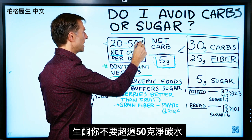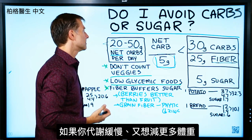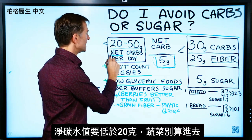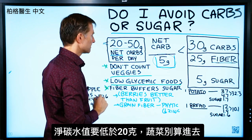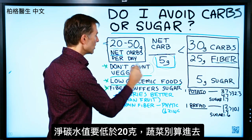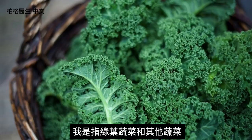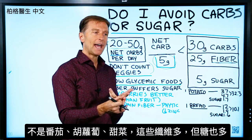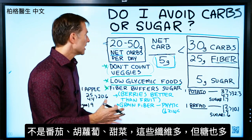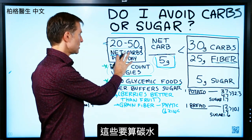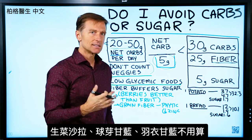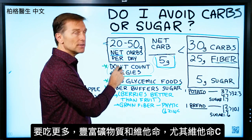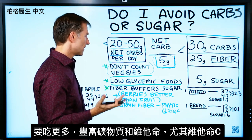With keto, you don't want to go above 50 grams. If you have a slow metabolism and want to lose more weight, cut the carbs even more. We're operating off of net carbs, not total carbs. You don't want to count vegetables like leafy greens in your equation at all. I'm not talking about tomatoes, carrots, or beets, which have more sugar — you may want to count those. But for most salads, Brussels sprouts, and kale, you do not need to count them. In fact, we want you to eat more of those foods because of the minerals and vitamins like vitamin C.